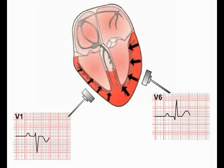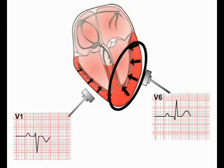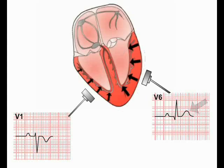The deflection produced on an ECG by ventricular repolarization is again dominated by the signal from the left ventricle. As this repolarizing current is moving towards V1, the deflection produced is negative in this lead. In contrast, this repolarizing signal is moving away from lead V6, producing a positive deflection.